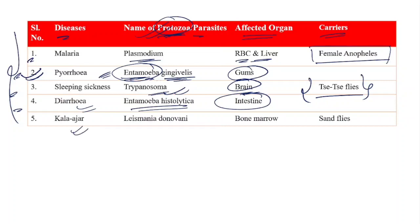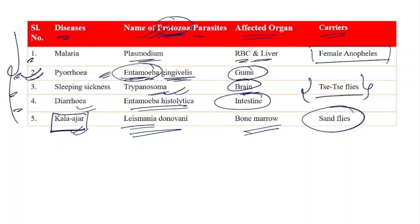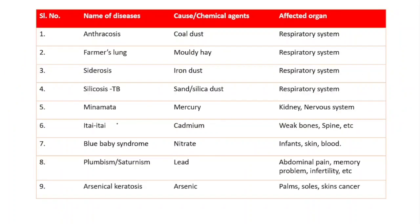Number five: Kala-azar is caused because of the parasite Leishmania donovani and it affects the bone marrow. The carrier is the Sand fly. This is very important — I have seen questions on Kala-azar in examination papers. Kala-azar is caused because of a protozoa or parasite, the name is Leishmania donovani, and it affects the bone marrow.